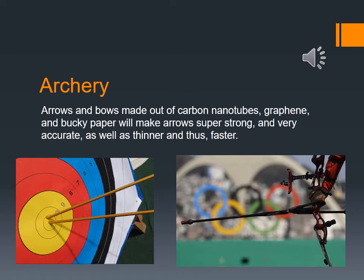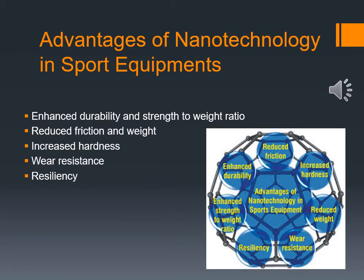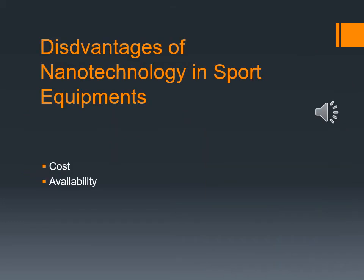In archery, arrows and bows made out of carbon nanotubes, graphene, and buckypaper will make arrows super strong and very accurate, as well as thinner and thus faster. The advantages of nanotechnology in sport equipment are enhanced durability and strength-to-weight ratio, reduced friction and weight, increased hardness, wear resistance, and resiliency. The disadvantages of nanotechnology in sport equipment are cost and availability.